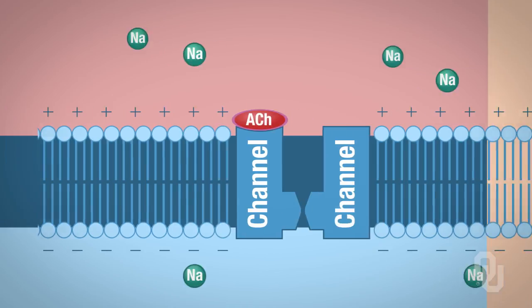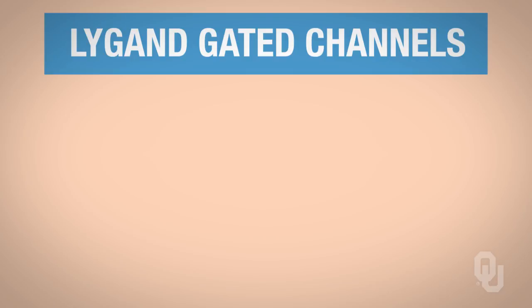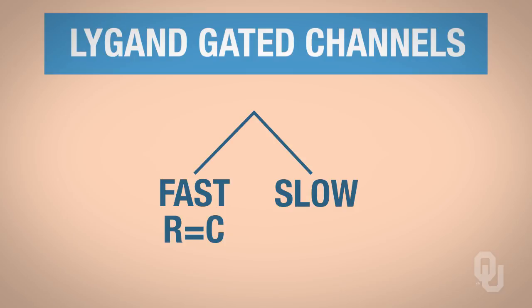So now let's go ahead and look at the two different types of ligand-gated channels. So we have what are called fast ligand-gated channels, and we have slow ligand-gated channels. So we're going to talk about both. So a fast ligand-gated channel, the receptor is the same protein as the channel. And a slow ligand-gated channel, the receptor is a different protein than the channel.